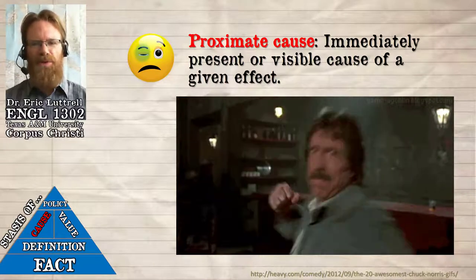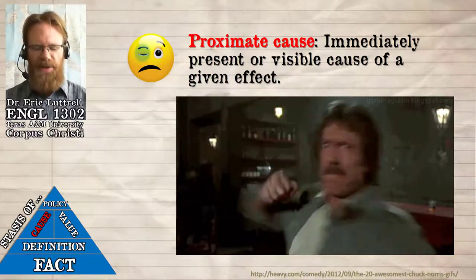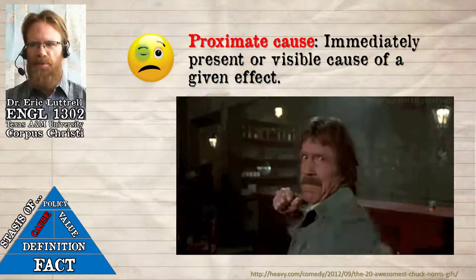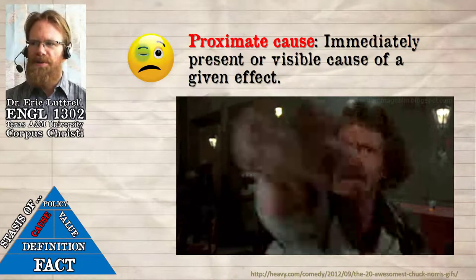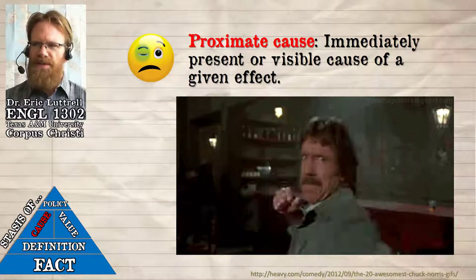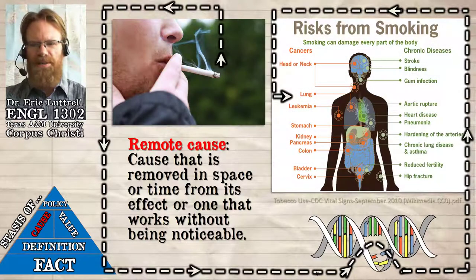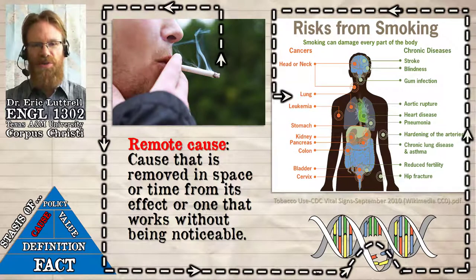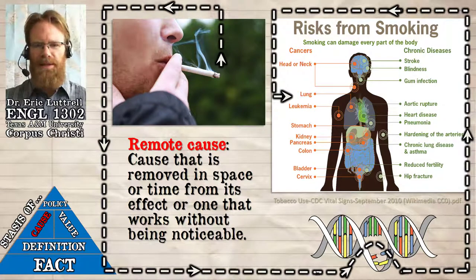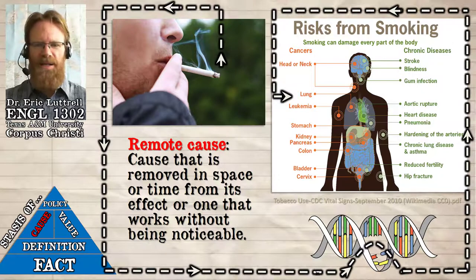Sometimes causes are unambiguous — you see one thing happen and immediately after you see another thing happen in a predictable way. This is called proximate cause. Proximate just means close: a proximate cause is the immediately present or visible cause of a given effect. The opposite would be a remote cause, sometimes also referred to as an ultimate cause — a cause that is not directly or obviously linked to an effect, but is actually causing it, even if we don't see all the chain of cause and effect between the remote cause and the final effect.